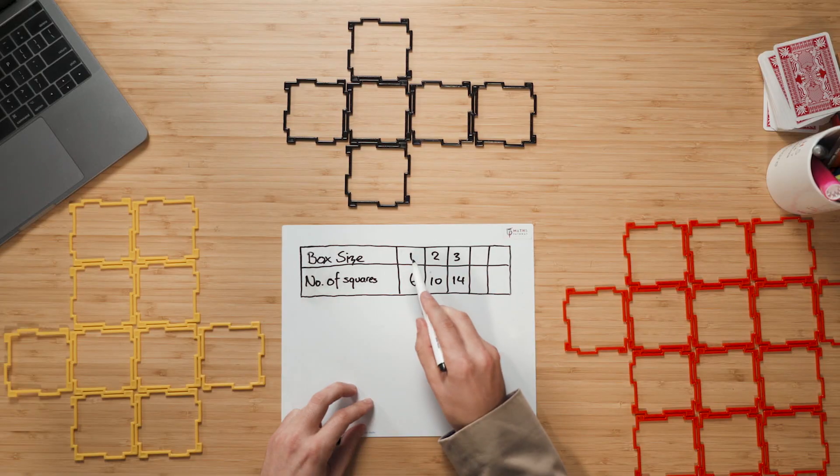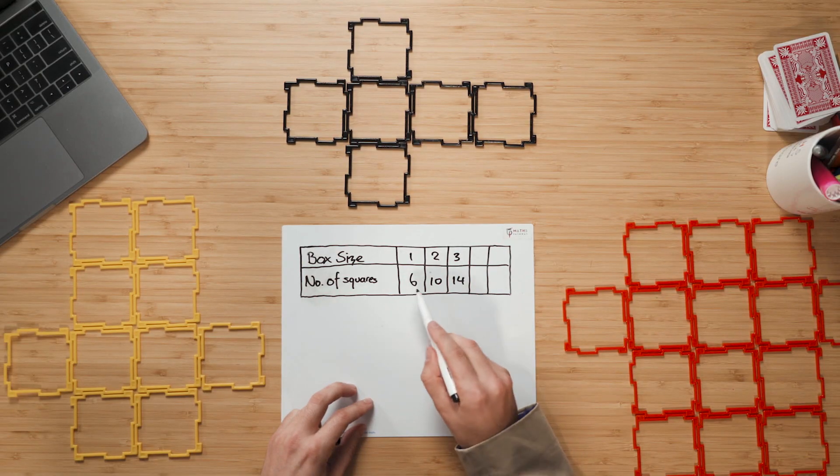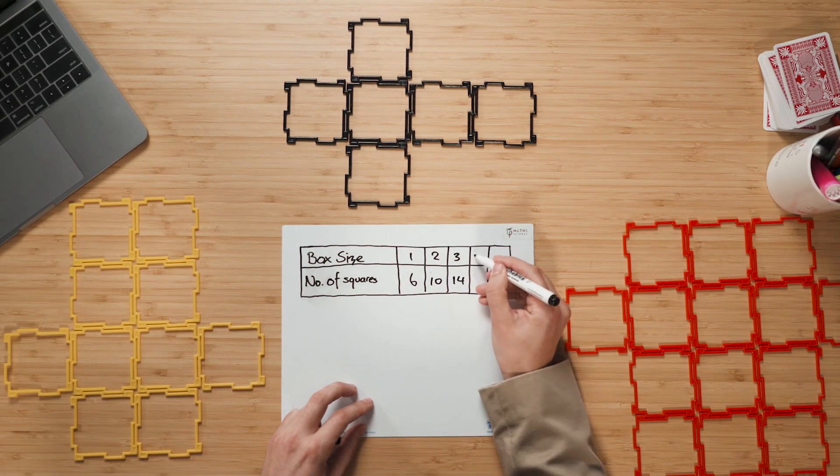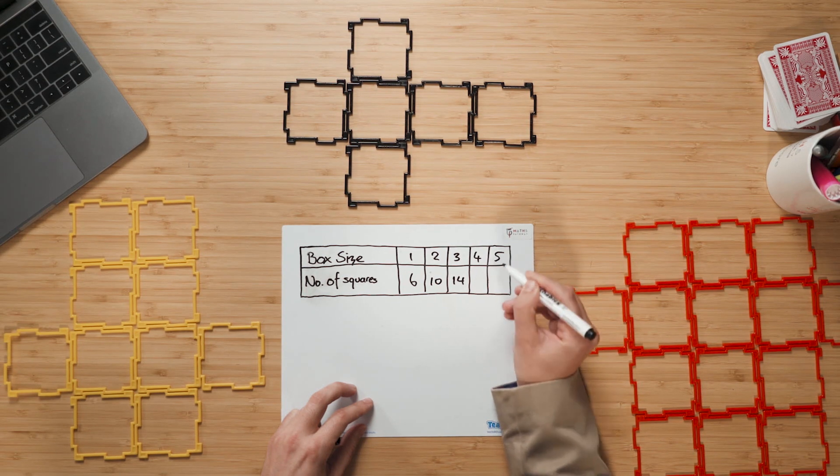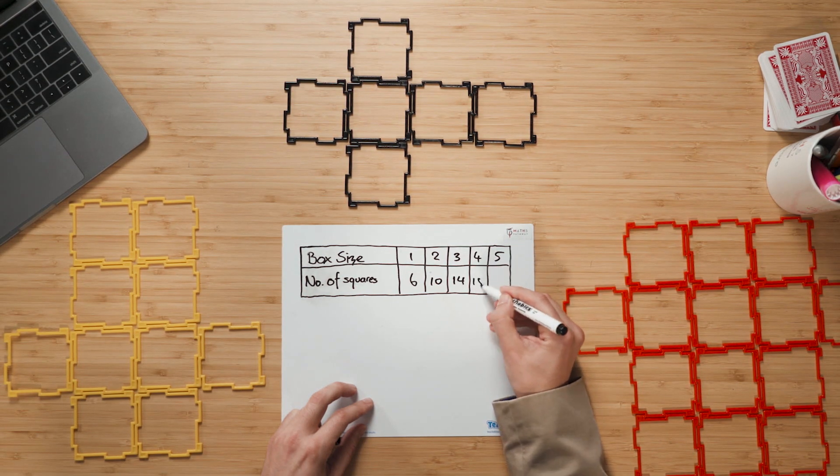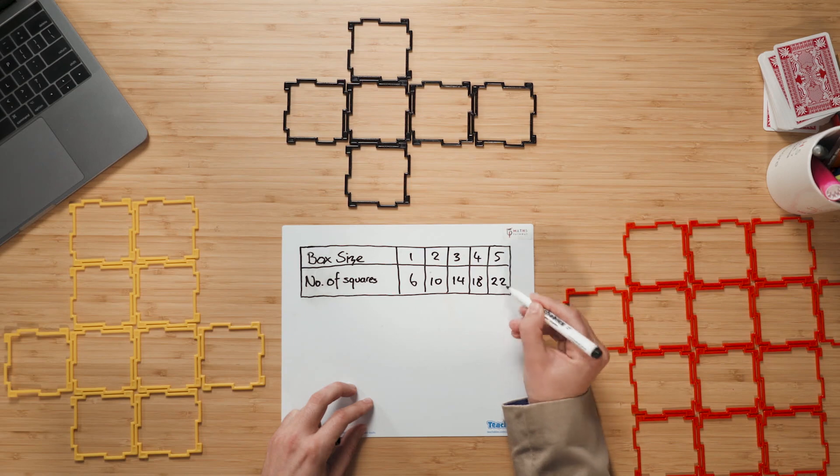Now at this point, some students might recognize a bit of a pattern that is happening. For example, they might see that it's going up by ones here and by fours here. So that means this would become four and five. And then for a size four, we would have 18 and for a size five, we would have 22 squares. That's great. If students can start to see patterns already, then they are on the right track to being able to successfully use algebra.